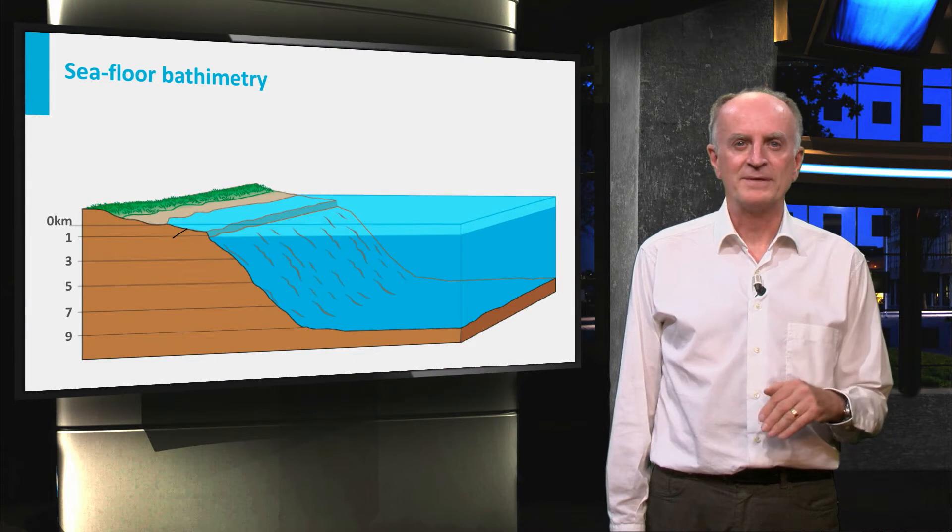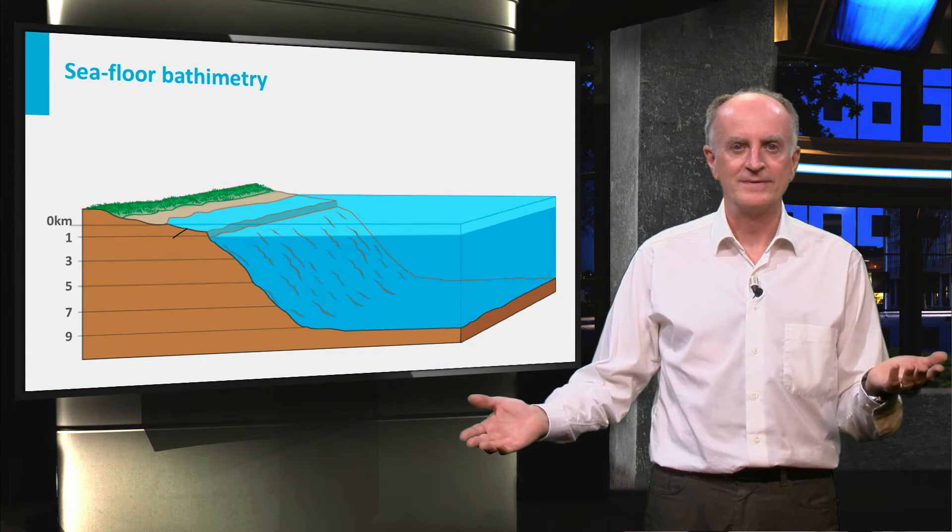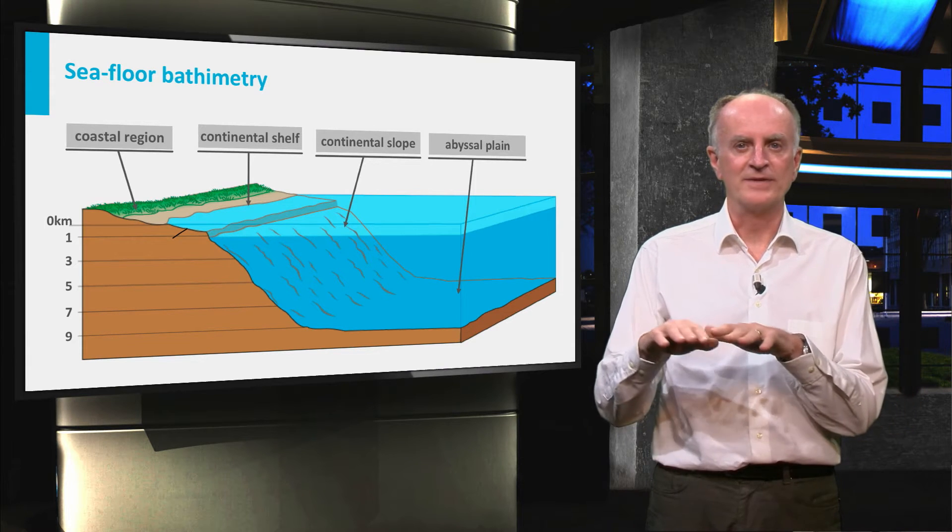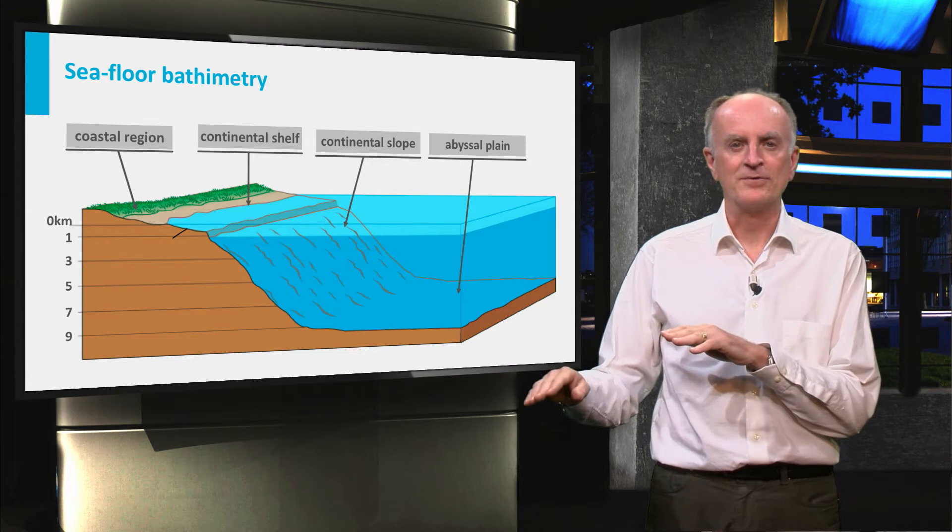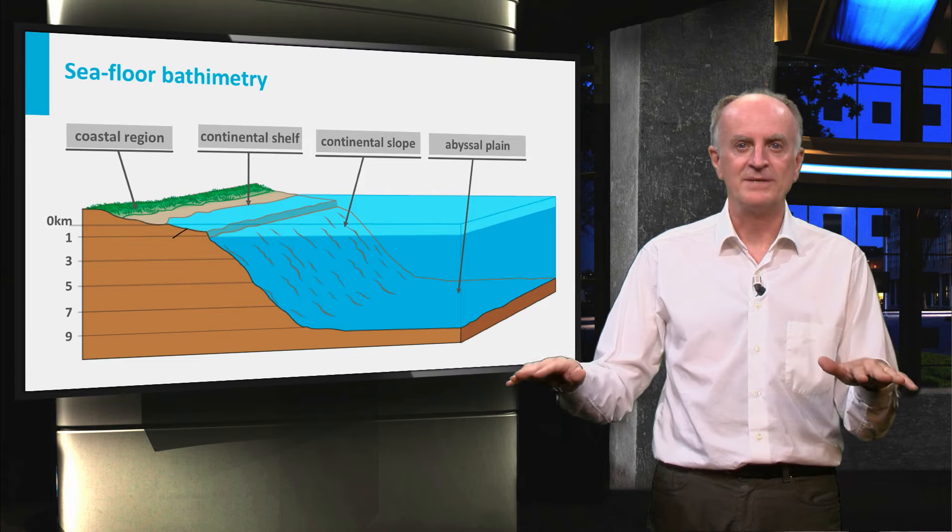This is the bathymetry of the sea floor along a representative transect from the coast to the deep ocean. You can see the coastal regions, the large and flat continental shelf, the relatively steep and narrow continental slope, and eventually the huge and monotonous abyssal plain.